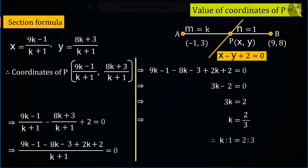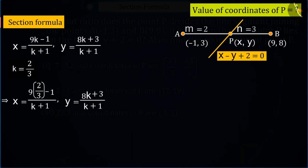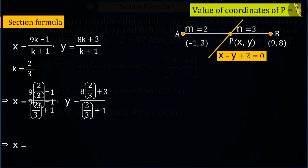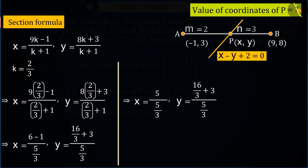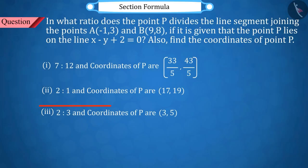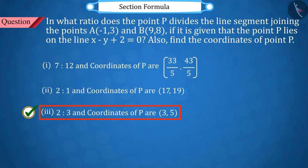From which we can say that line segment AB is divided by point P in 2 ratio 3. Since we now know the ratio of P, therefore, in the coordinates of P obtained from the section formula, put the values of K, which gives the coordinates of P, 3, 5. Thus, option 3 is the correct answer.